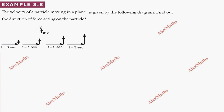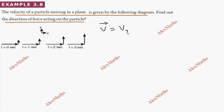Hi students, this is Alex here. Example 3.8: the velocity of a particle moving in a plane is given by the following diagram — find the direction of the force acting on the particle. The velocity vector has components: along x, vx i-cap; along y, vy j-cap; and along z, vz k-cap.